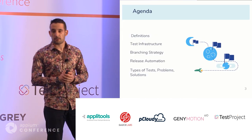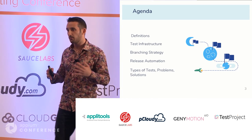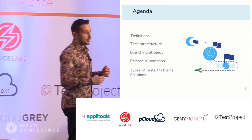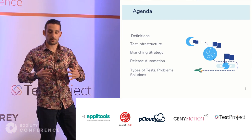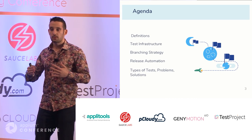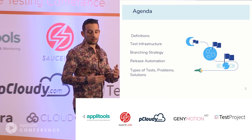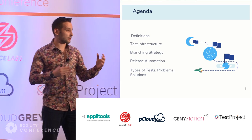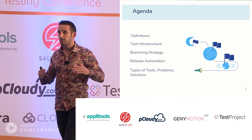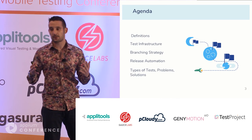Here's our agenda. First, we'll go through some definitions — what is the difference between a library, a framework, and a test automation framework. Then I will tell you more about our framework so you can understand the context. I will share what tools we use to release and test it, a bit about our branching strategy. The second part of the presentation will cover the different types of testing we do to make sure our framework is working correctly.